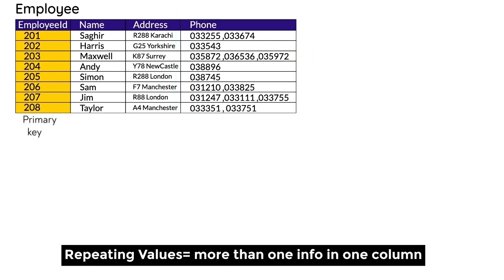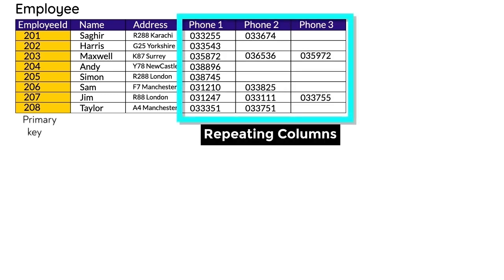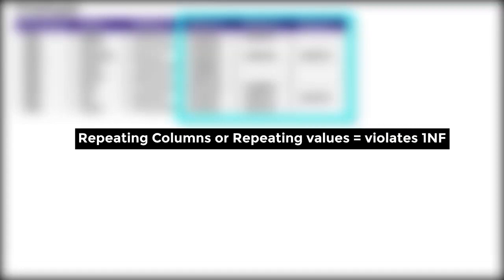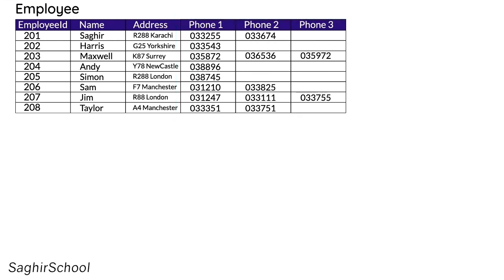Another possibility is writing multiple phone numbers in different columns — that's repeating columns, which also violates First Normal Form. Repeating columns are ones that contain almost the same type of information but stored in different columns.